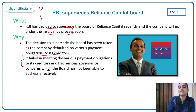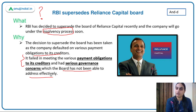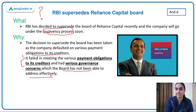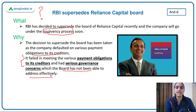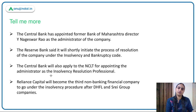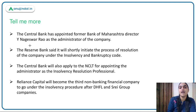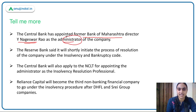There were also serious governance concerns which the board was not able to address effectively. Therefore, RBI had to supersede the board so this company will go through the insolvency process and creditors can get their money back. The Central Bank has appointed Mr. Y. Nageshwar Rao, former Bank of Maharashtra director, as the administrator of Reliance Capital.